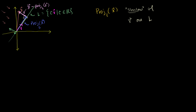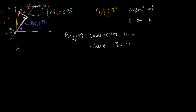So let me give a slightly more mathematical definition. The projection onto L of some vector x is going to be some vector that's in L — where x minus the projection vector onto L of x is orthogonal to the line. I'm defining the projection of x onto L as some vector in L where x minus that projection is orthogonal to L. This is my definition, and it connects to the idea of the shadow or a projection.